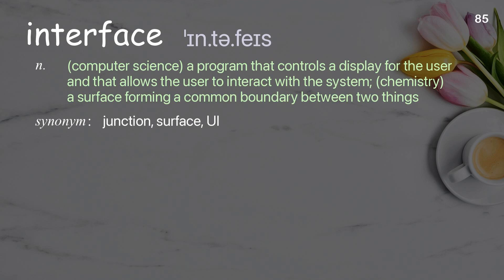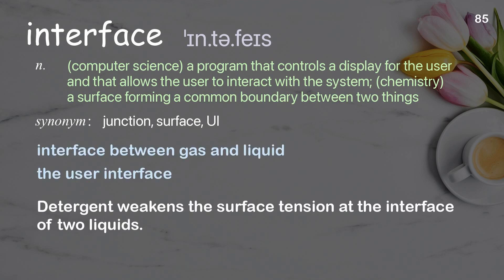Interface: in computer science, a program that controls a display for the user and allows the user to interact with the system; in chemistry, a surface forming a common boundary between two things. Examples: Interface between gas and liquid. The user interface. Detergent weakens the surface tension at the interface of two liquids.